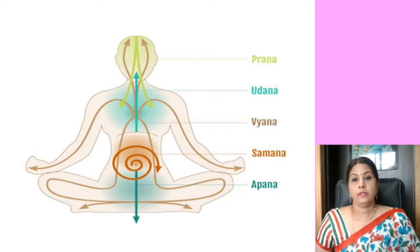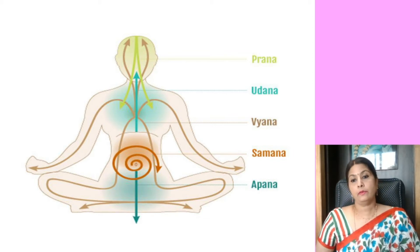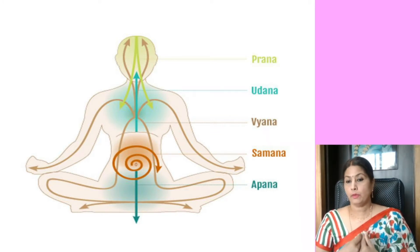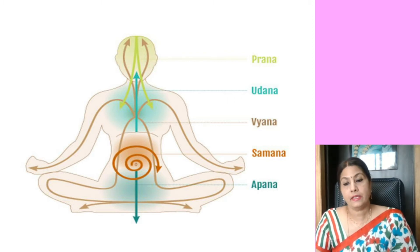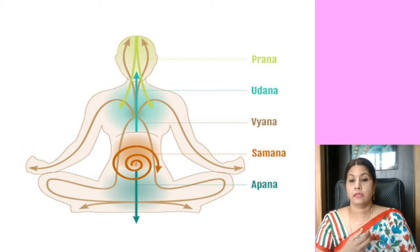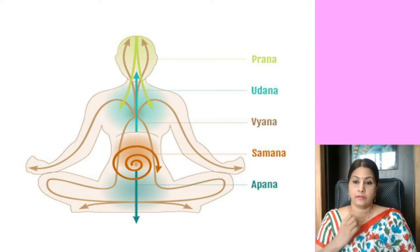The fourth type of vayu is the udana vayu, present in the throat region. It is because of this vayu that we are able to stand upright and straight, and turn in different directions. If this vayu were not functioning, we would walk around like animals. This vayu also helps in swallowing of food, vomiting, and singing. When it comes to pronunciation of words, we use this vayu.